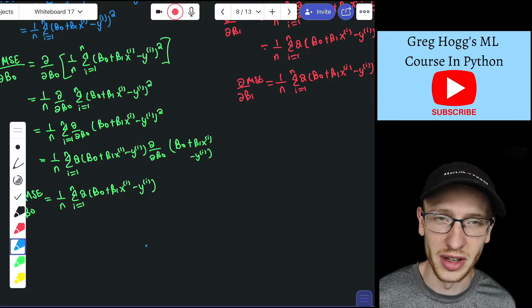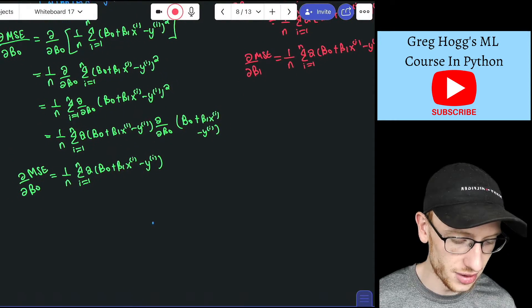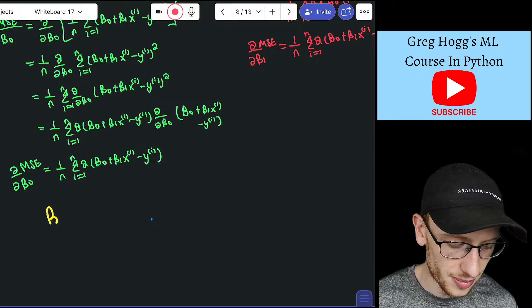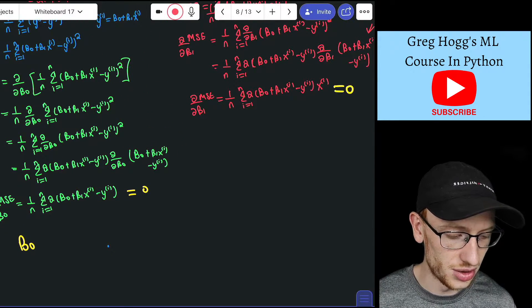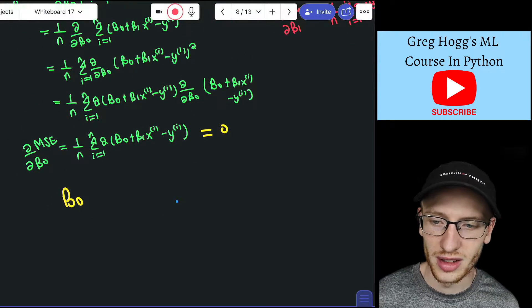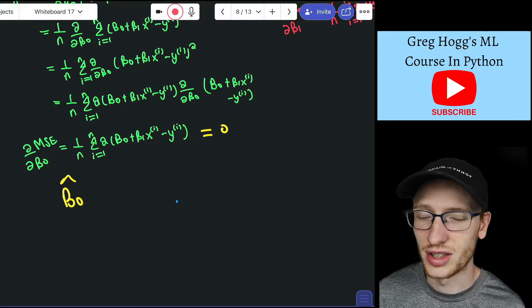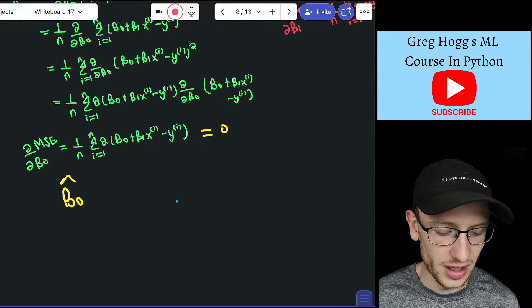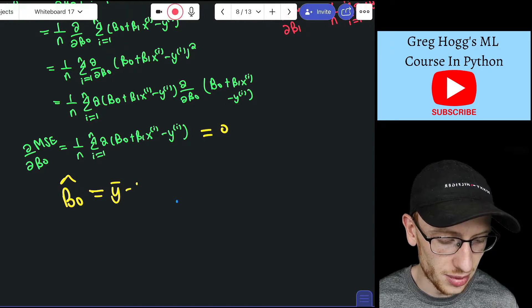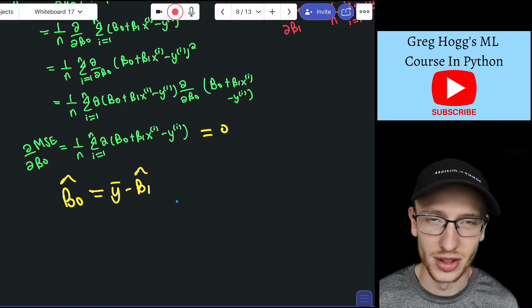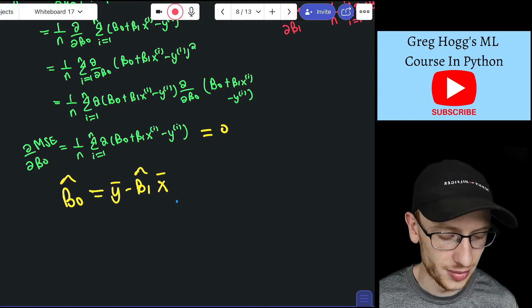So the solution is basically you get beta0 after you set this equal to 0 and this equal to 0, these two derivatives. You would get that beta0, and I'll write hat because that's like basically saying our guess for beta0, is equal to y bar minus beta1 hat, which is our guess for beta1, times x bar.